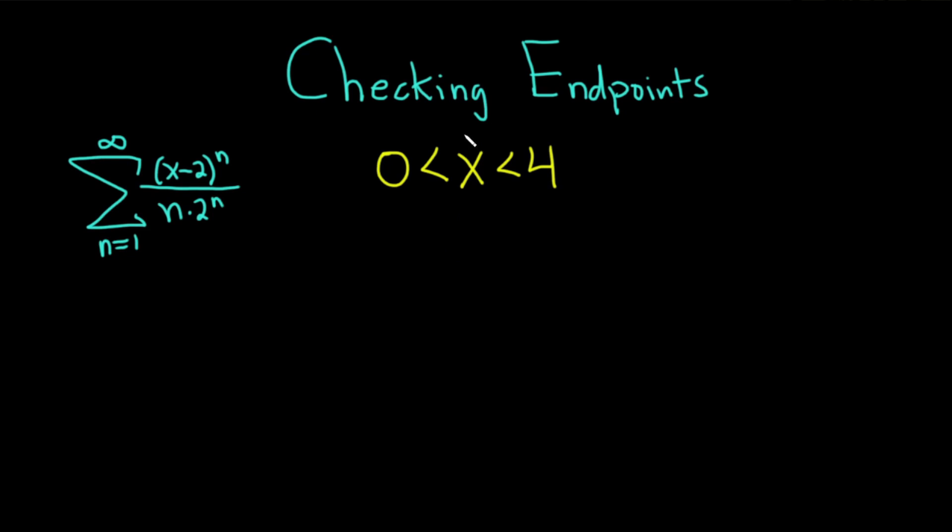In the second half of the problem, we're going to check the endpoints. The endpoints here are 0 and 4. We're going to take these and plug them into our infinite series. If the series converges, we'll include the endpoint in our answer. If it diverges, we will not include it.